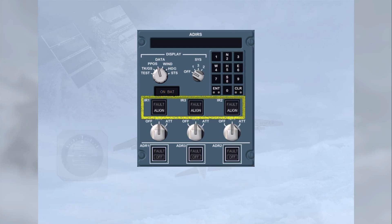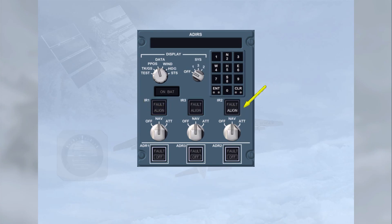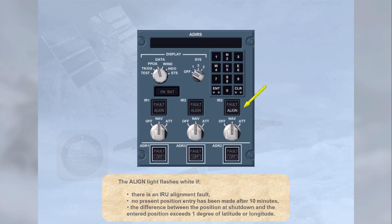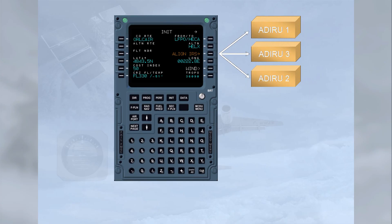Each inertial reference unit has an associated indicator. The ALIGN light illuminates steady white when the respective IRU is operating normally in ALIGN sequence mode. The ALIGN light flashes white if there is an IRU alignment fault, no present position entry has been made after 10 minutes, or the difference between the position at shutdown and the entered position exceeds 1 degree of latitude or longitude. Present position information for ADIRU alignment is normally entered via the INIT page of the MCDU.